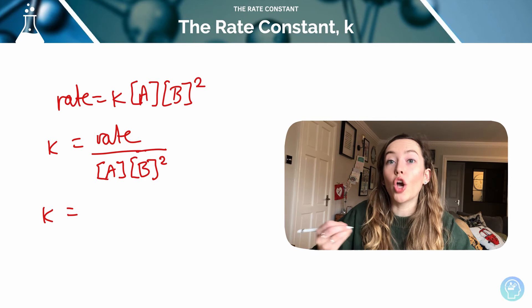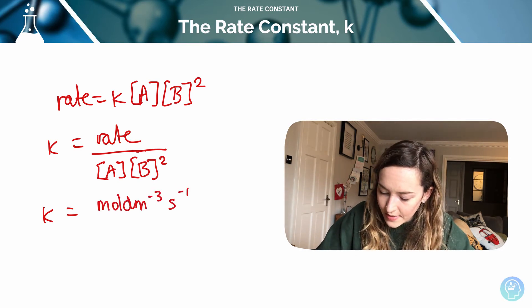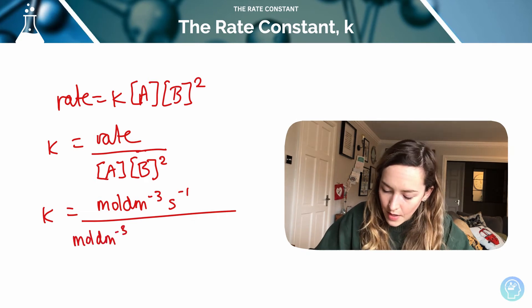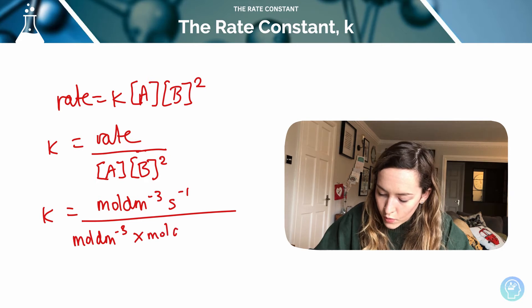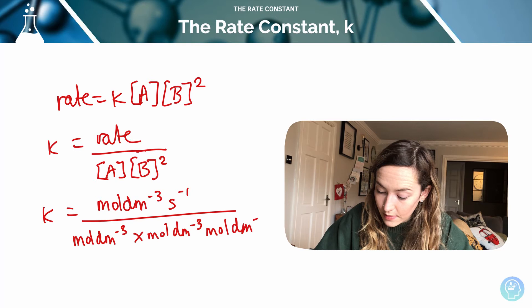So k is going to equal our units of rate, which is moles per decimetre cubed per second, over moles per decimetre cubed. That comes from A times moles per decimetre cubed squared. So I'm just going to write it twice, because it's the same thing.